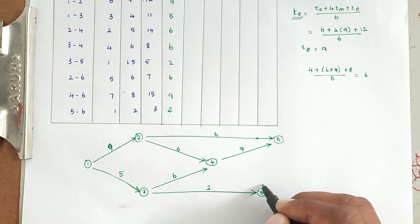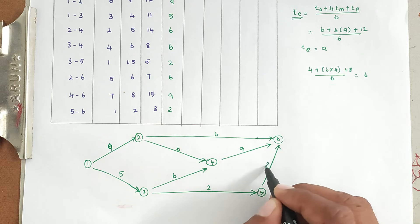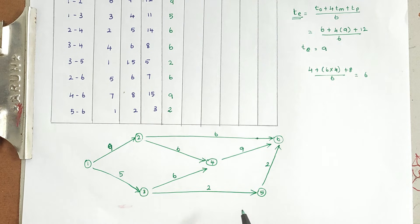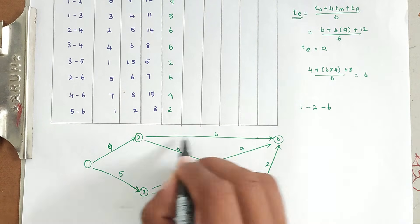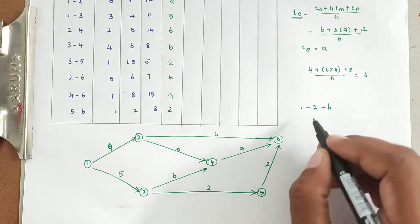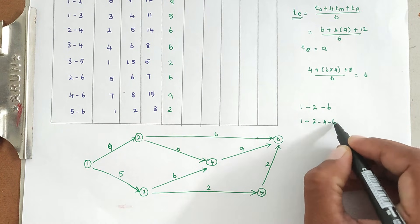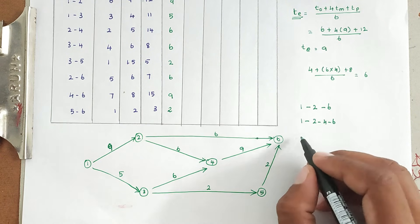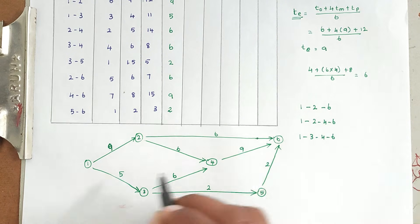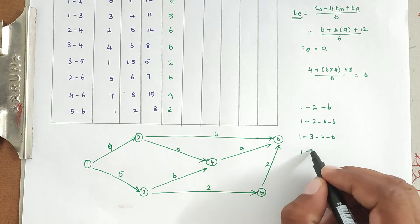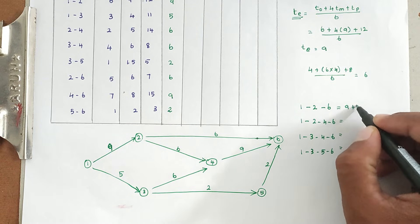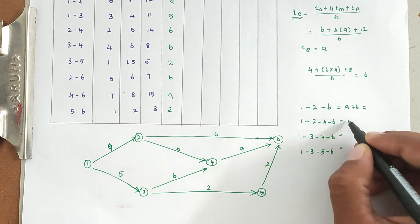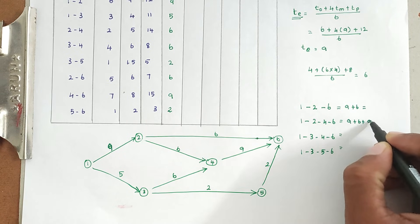Activity 5-6 has duration 2. This completes the network diagram. Now we find the critical path. The paths are: 1-2-6, 1-2-4-6, 1-3-4-6, and 1-3-5-6. The corresponding durations are: path 1-2-4-6 = 9 + 6 + 9 = 24, path 1-3-4-6 = 5 + 6 + 9 = 20.